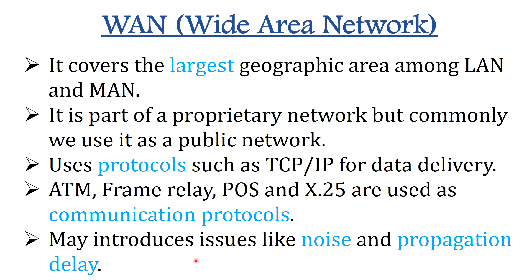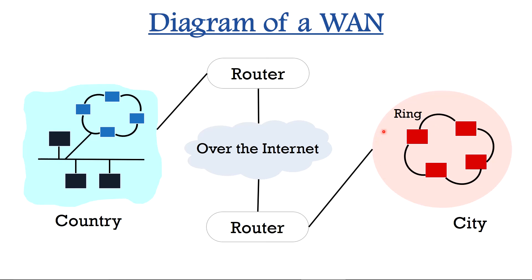WAN may introduce issues such as noise and greater propagation delay. It uses the principle of store-and-forward or packet-switched subnet: when a process on a host has a message to send, the sending host first cuts the message into packets, each bearing its number in the sequence. These packets are injected into the network one at a time in quick succession. WAN also uses routing algorithms for delivering packets from one point to another. A typical WAN diagram shows a country network connected to a city network in another country via internet routers.